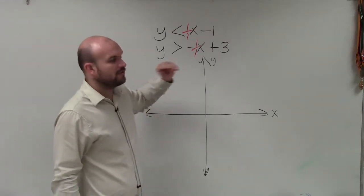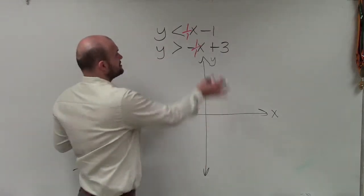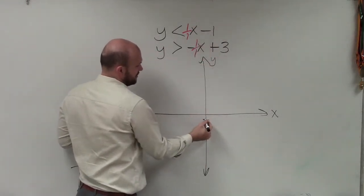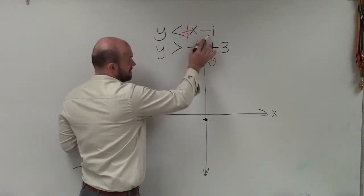Well, I'm sorry. For one equation, let's just graph one equation at a time. So the first one, the y-intercept here is negative 1. So I go down on the y-axis to negative 1, and I make a nice big dot. All right? That's my y-intercept.